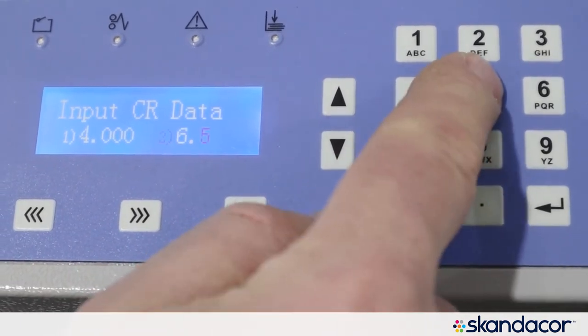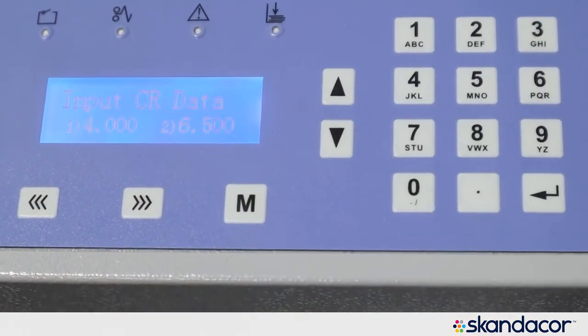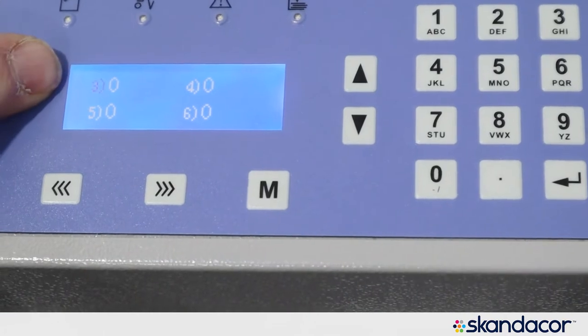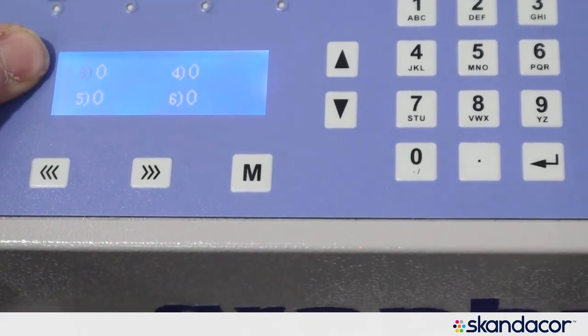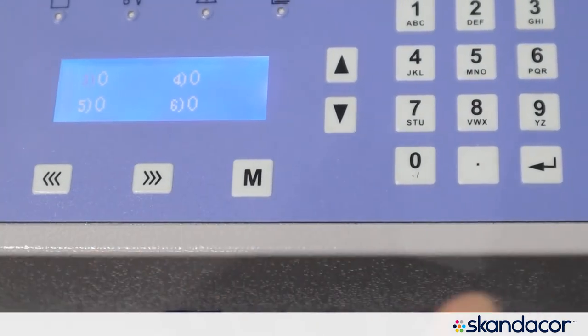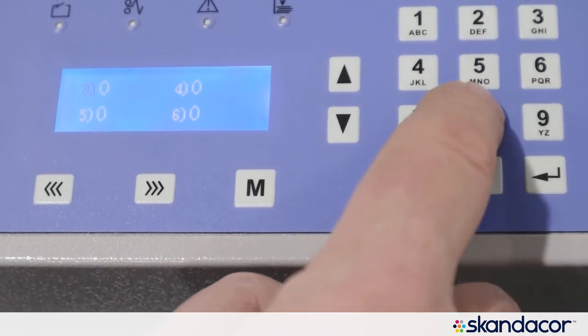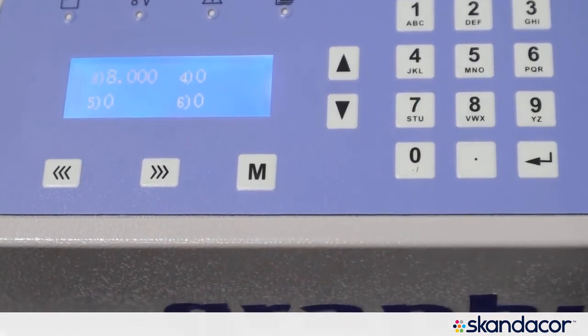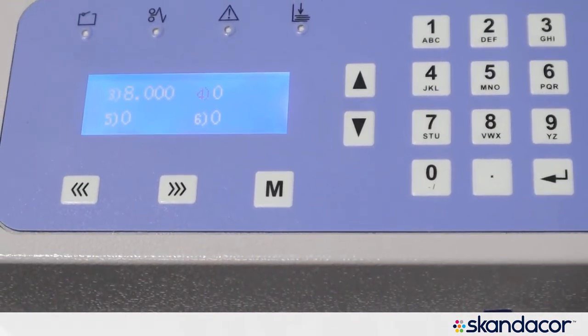So I go 6.5 and I hit my enter. This now comes to the next screen where I can enter my third crease position. Say I wanted to do that one at eight inches and go eight enter. Now that's the end of my job.